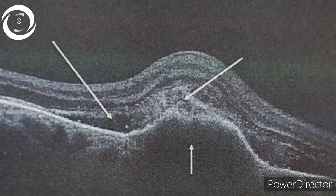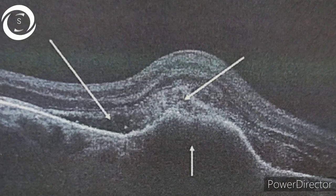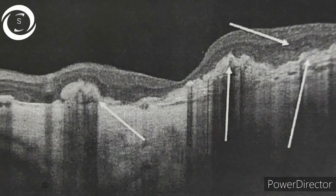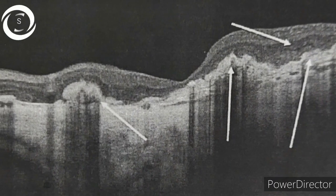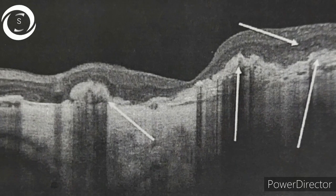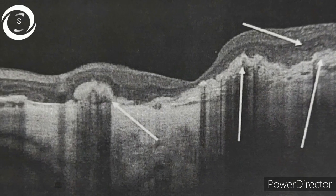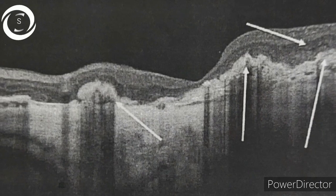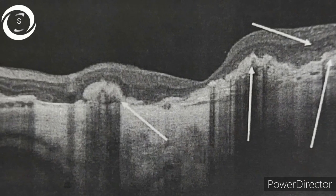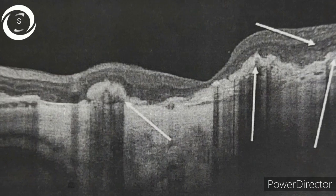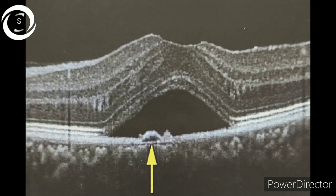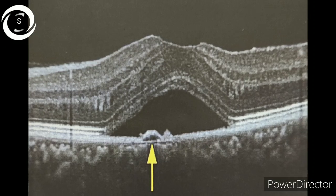In the fifth OCT, the hyper-reflective material is sub-retinal hemorrhage along with hyper-reflective fluid with a large PED. This is hemorrhagic CNV. In the sixth OCT, you can appreciate the white hyper-reflective fibrotic material present in the sub-retinal space — that is a disciform scar. There is loss of photoreceptor layers above the scar, and you can also appreciate shadowing underneath the scar.